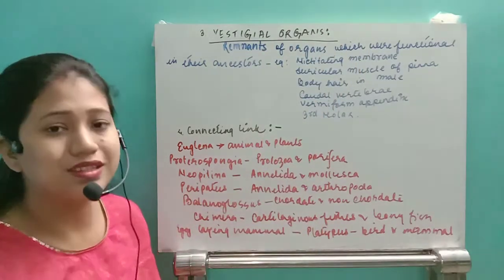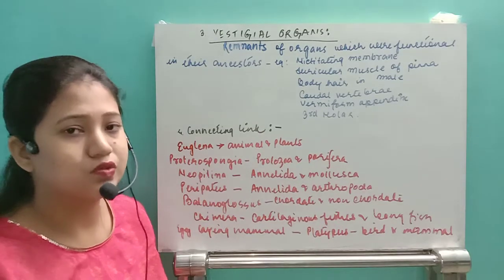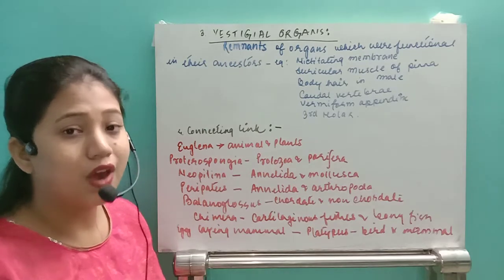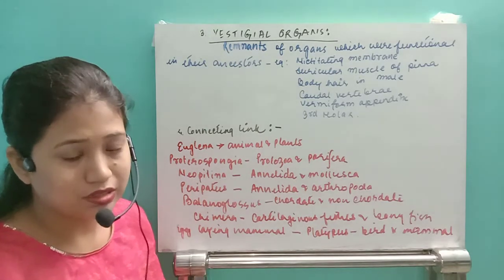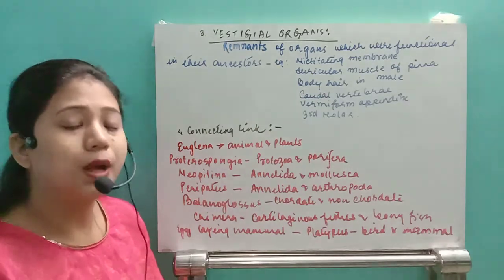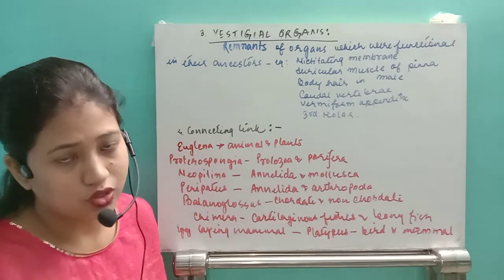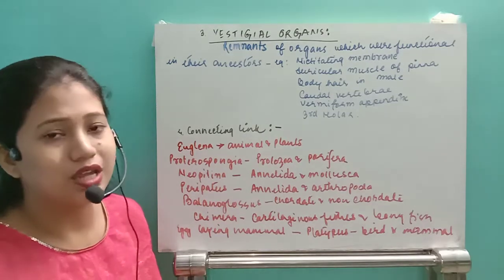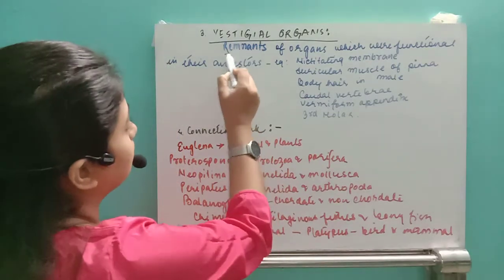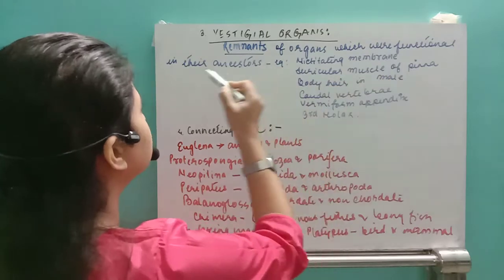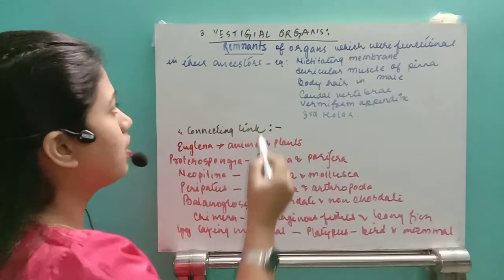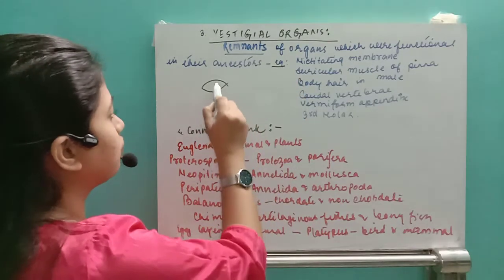What is the vestigial organ? The vestigial organ is present in some species but is not functional or not complete in that species. However, it was complete and fully functional in their ancestors. So the vestigial organs are the remnants of organs which were functional in ancestors.